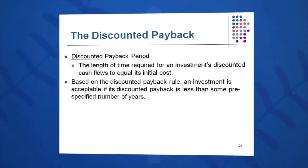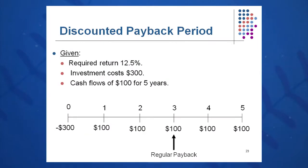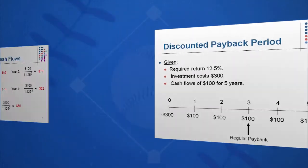You need a discount rate from the CFO — in this example it's 12.5%. This investment costs $300 and we will get cash flows of $100 in each year for five years. The question is: when do we pay the CFO back?